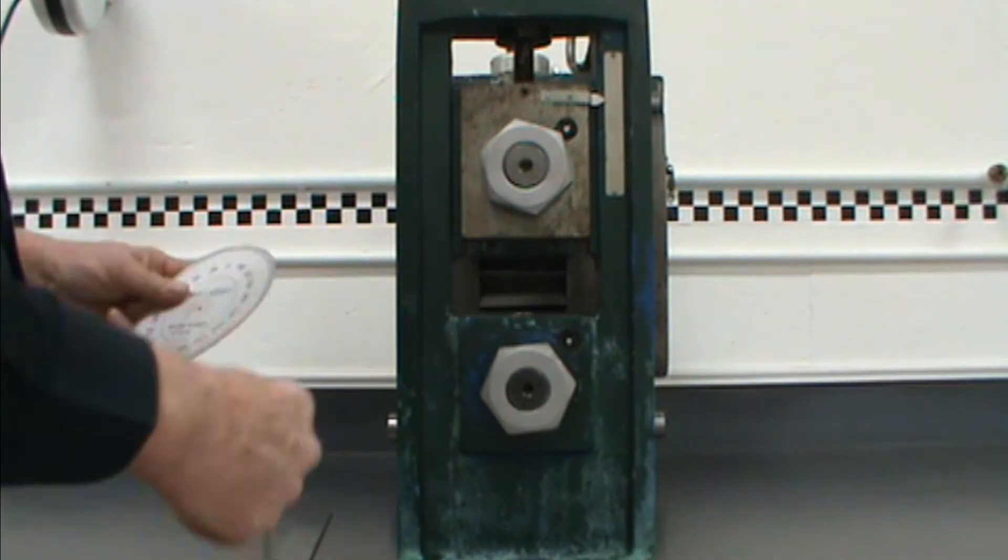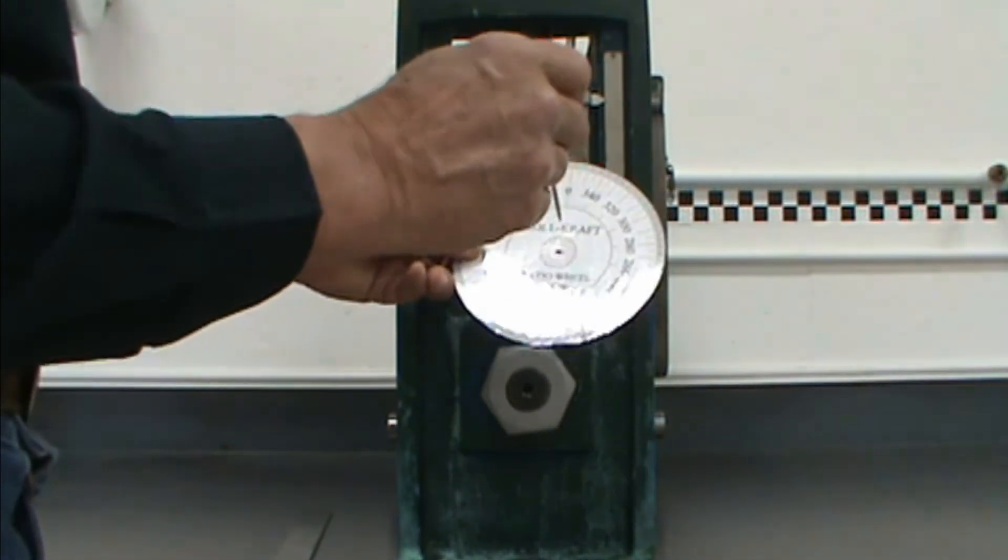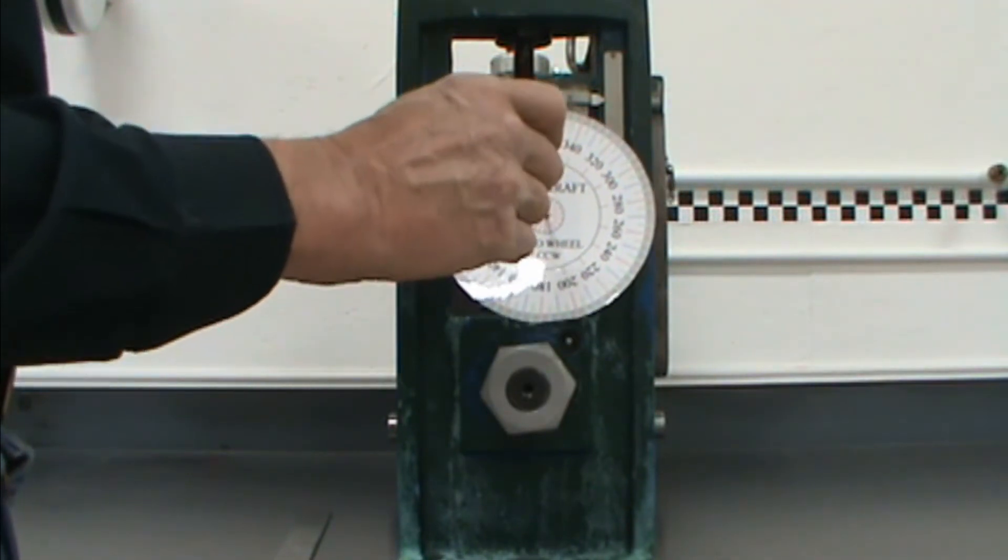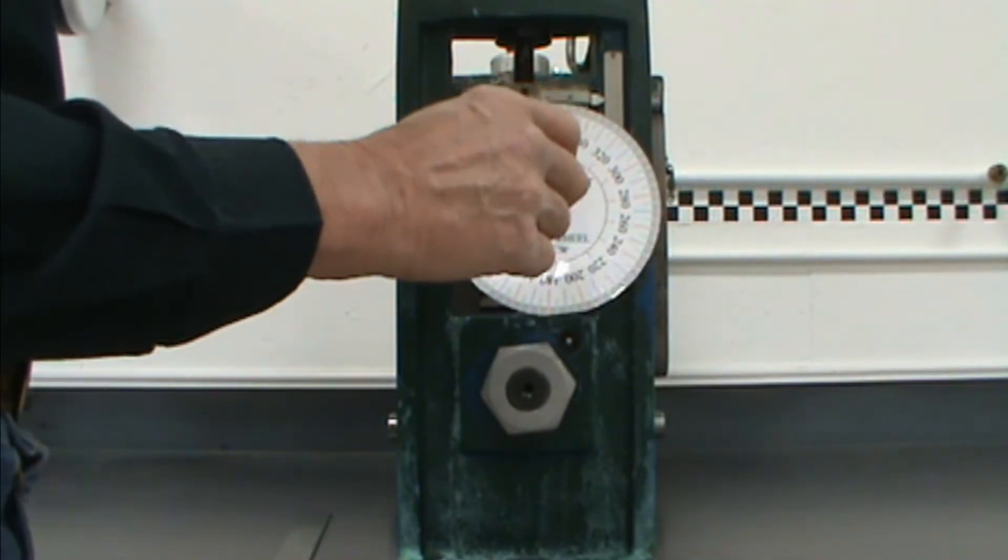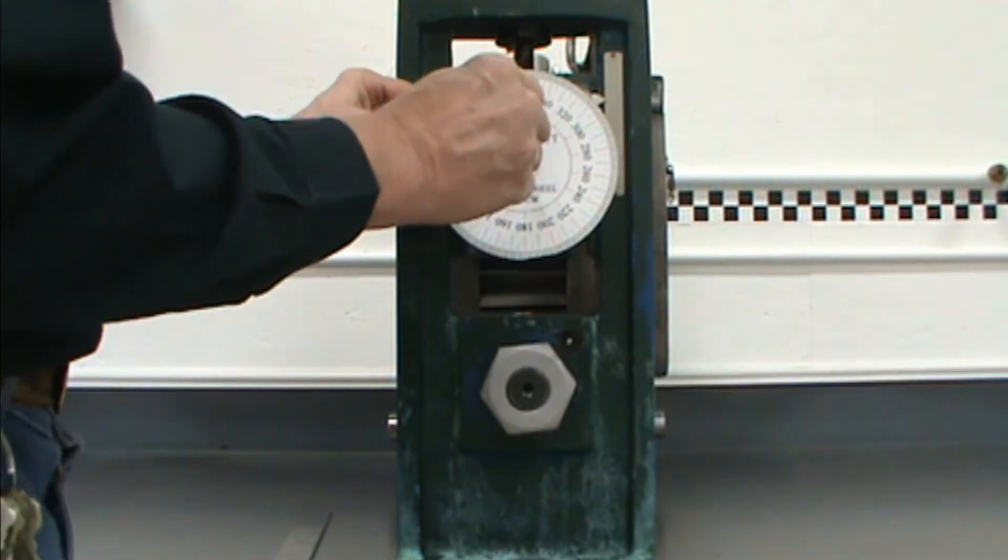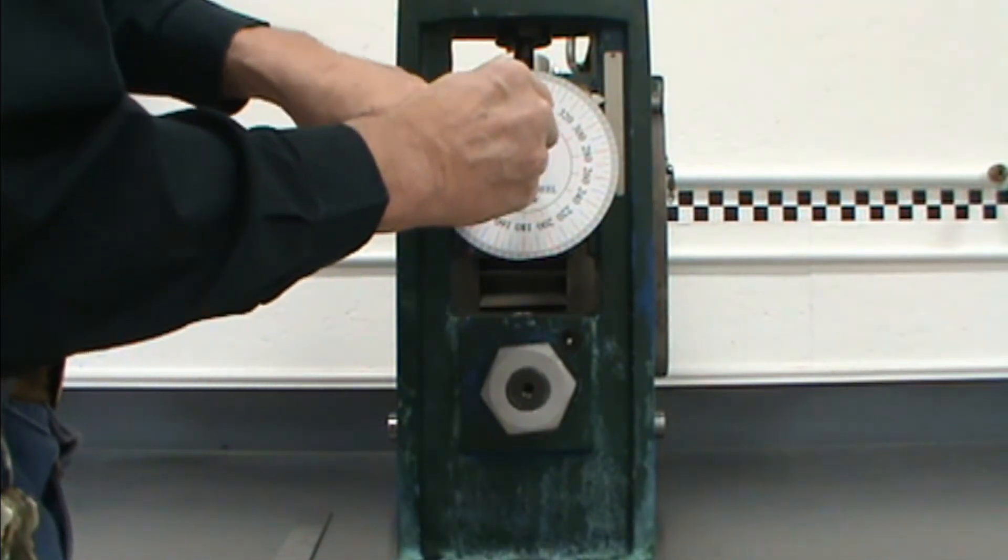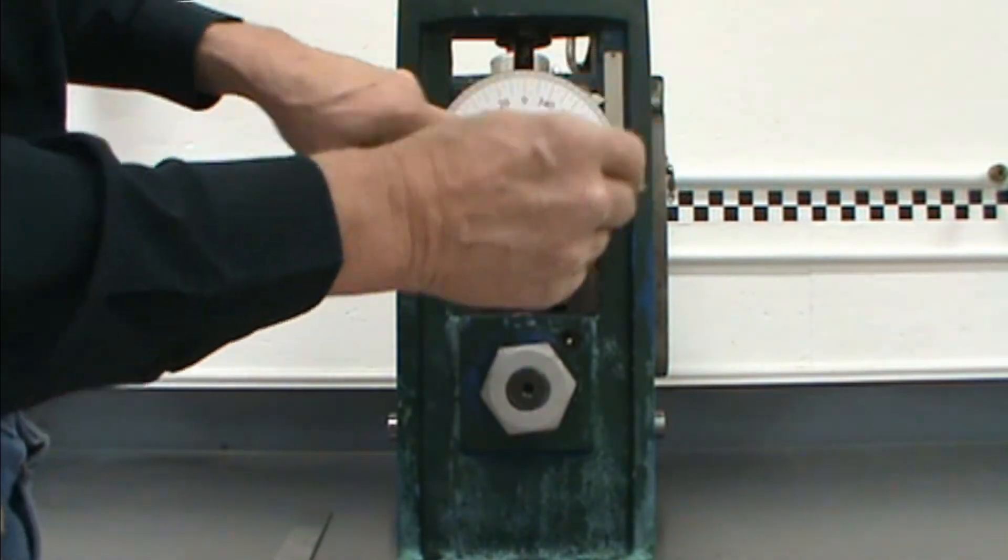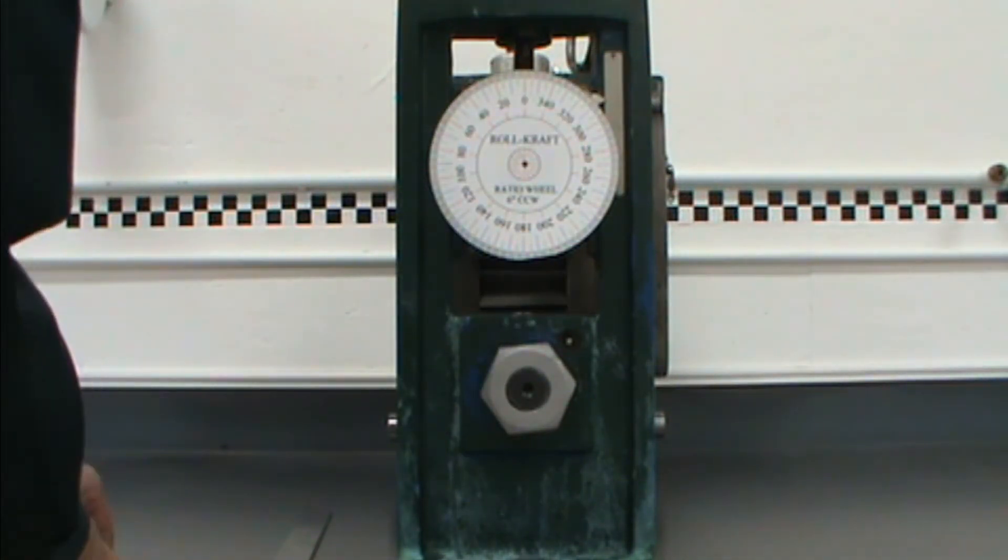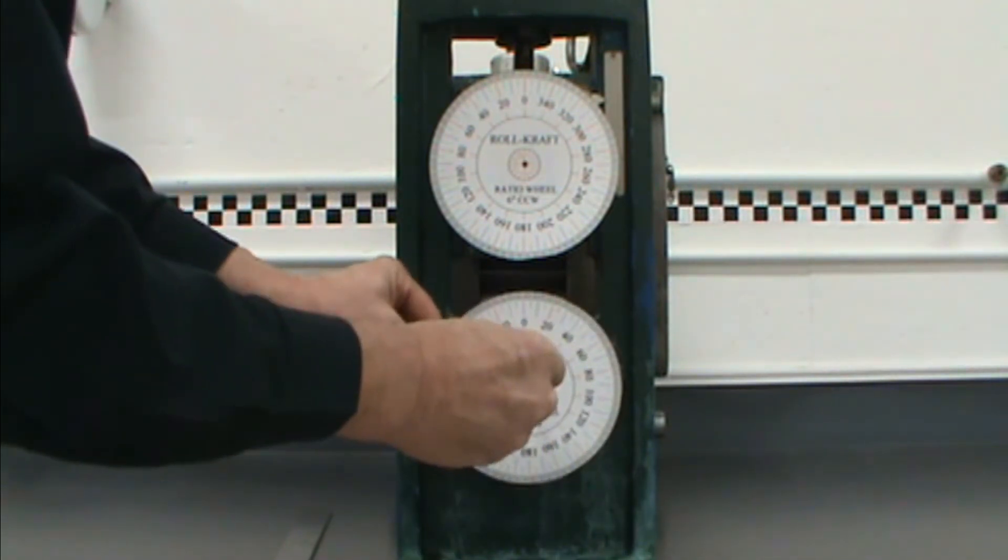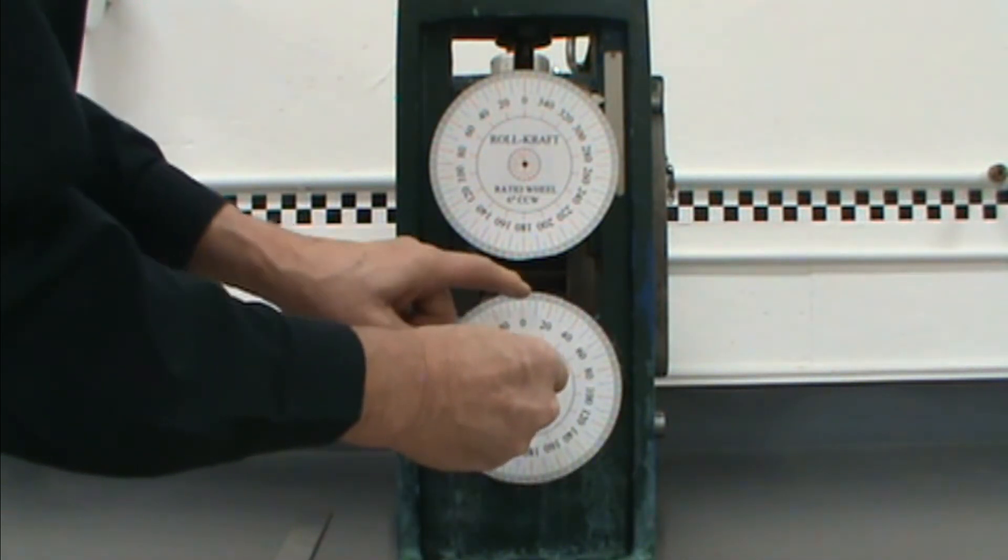So with that, we want to take the clockwise ratio wheel and affix it to the top shaft. We put the awl in the center of the ratio wheel which will line up with the center of the shaft and line up the zero right at the top. Pull your awl out. Do the same thing with your counterclockwise ratio wheel for the bottom shaft. Again, line up your zero to the top.